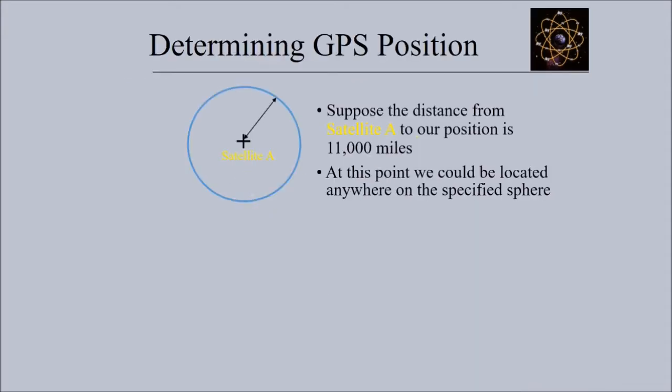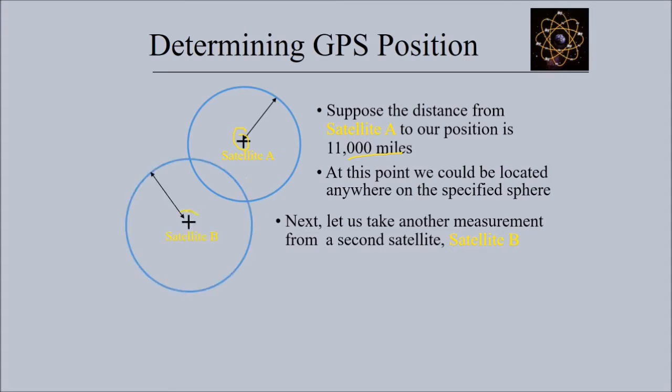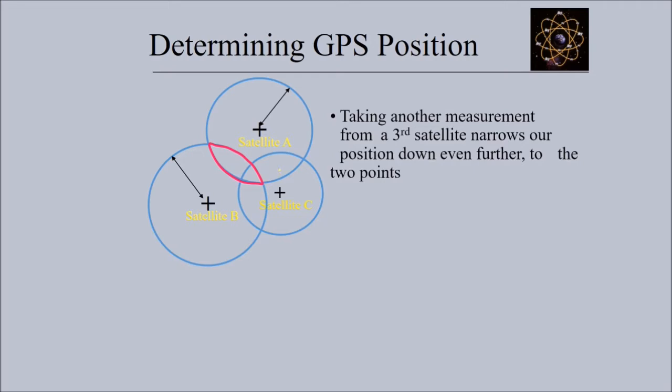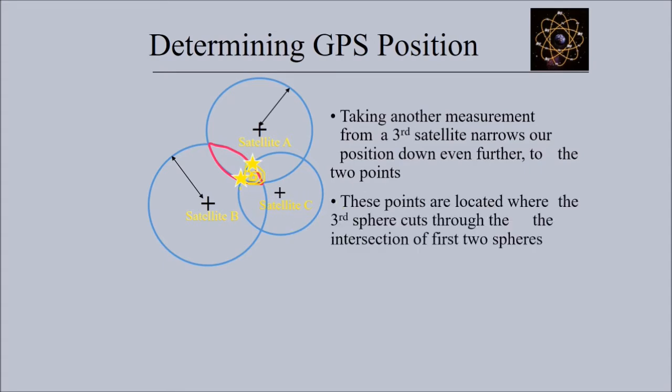Say the distance from satellite A to our position is some X kilometers. At this point we could be located anywhere in a specific sphere. Now take another measurement from satellite B. Our position is narrowed down to the intersection of these two spheres. Take a third measurement from satellite C, which narrows our position even further. These two positions are located where the third sphere cuts the intersection of the first two spheres.